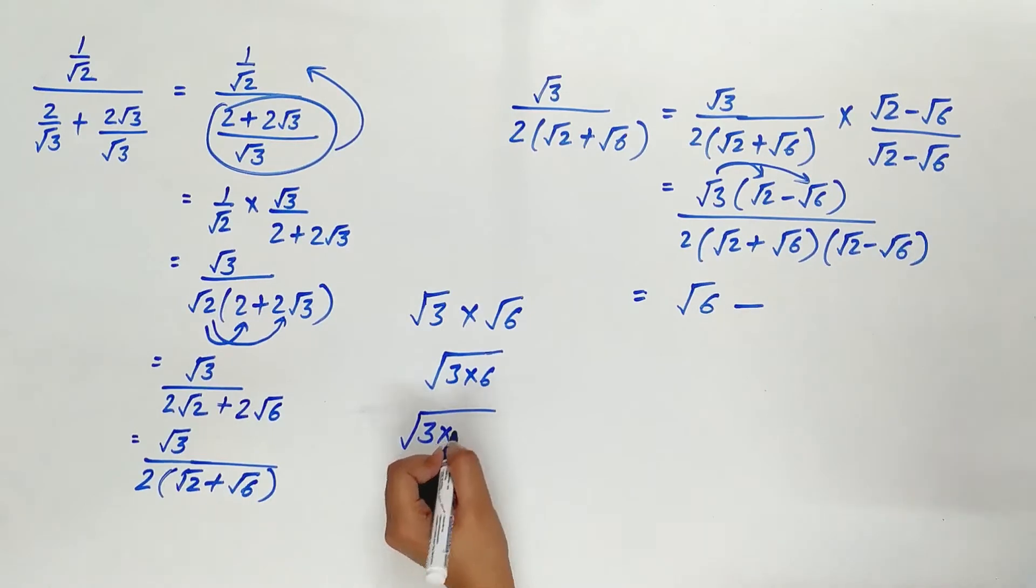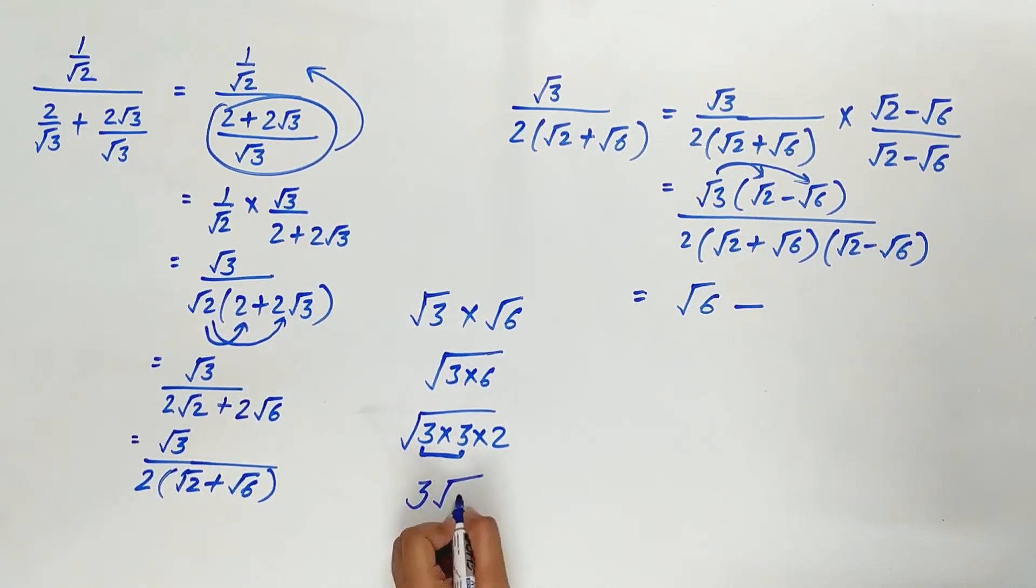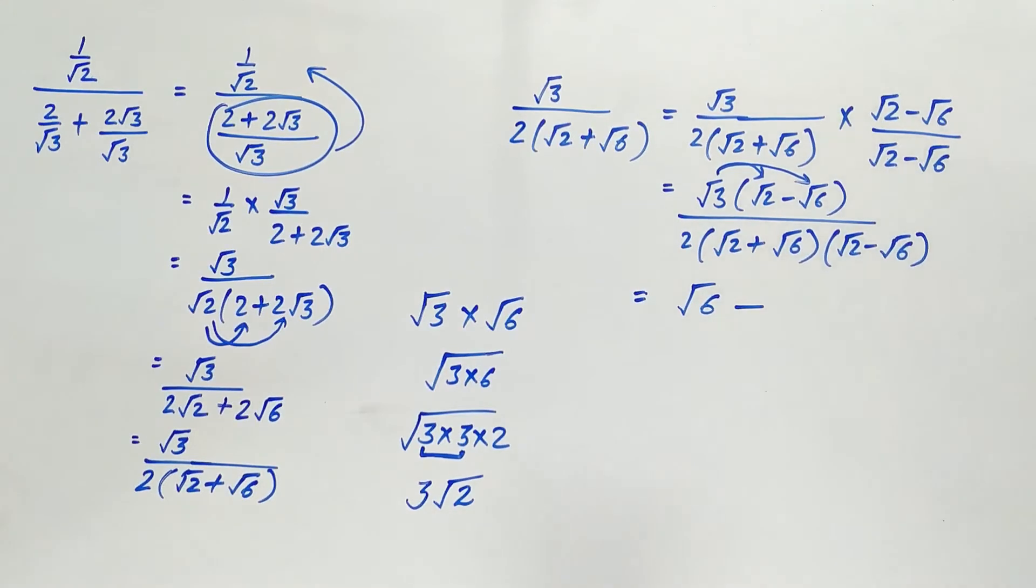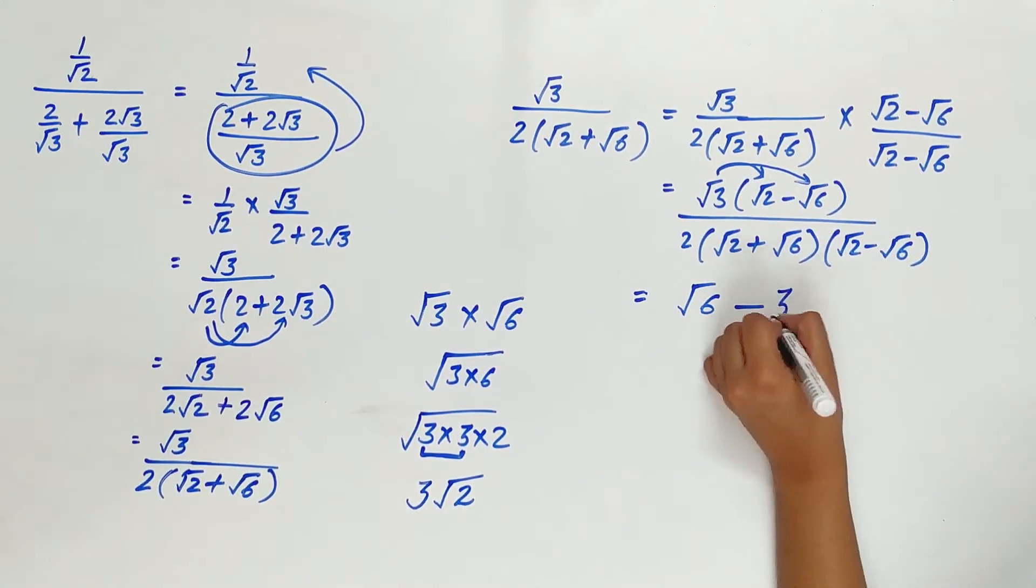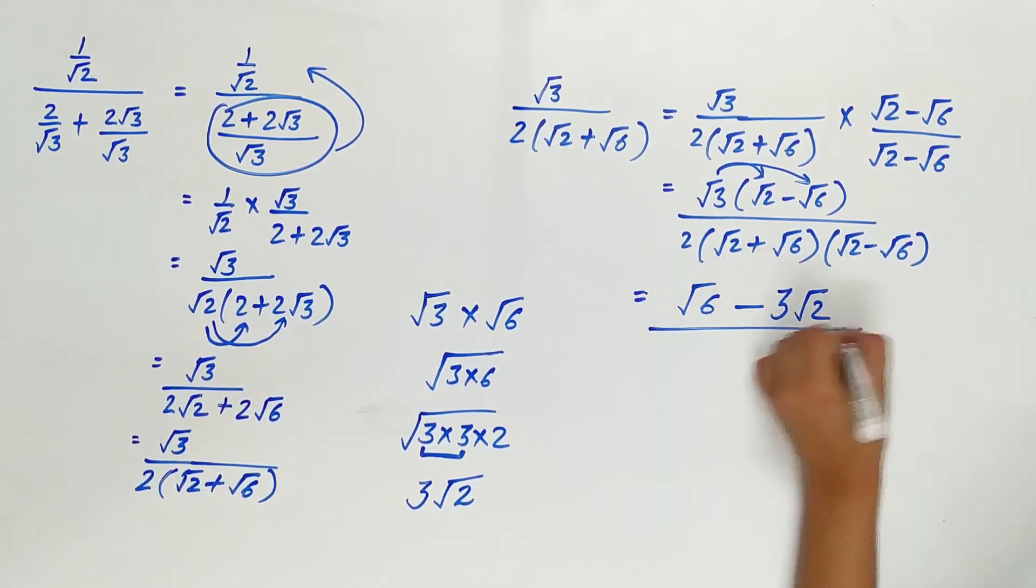Factors of 6 are 3 and 2. 6 can be written as 3 multiplied by 2. 3 forms a pair, move it outside the square root and remaining is 2. So root 3 multiplied by root 6 is 3 root 2.